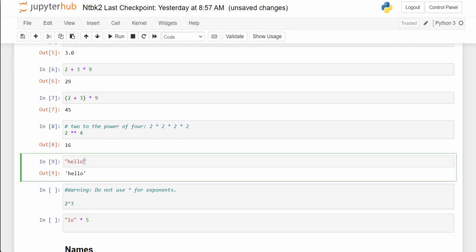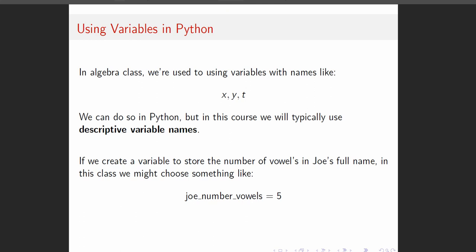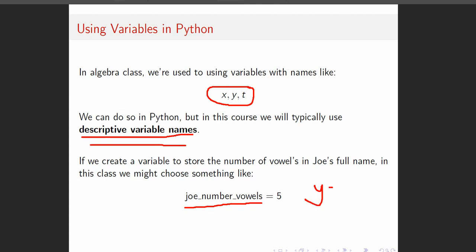Normally we're used to using variables with names like x or y, but in this class we're going to use descriptive variable names. For example, if we wanted to create a variable to store the number of vowels in Joe's full name, we might choose something like joe_number_vowels equals 5. This is what we mean by a descriptive variable name, instead of saying y equals 5 which might work in an algebra class. This convention is carried through the textbook, all of the notebooks, labs, and homeworks.